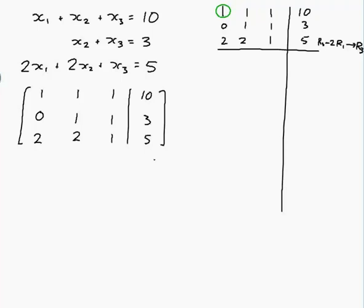We haven't changed row 1 or row 2. In fact, elementary row operations only change one row at a time. So 2 minus 2 lots of 1 is 0, 2 minus 2 lots of 1 is 0, 1 minus 2 lots of 1 is minus 1, and 5 minus 2 lots of 10, so 5 minus 20 would be minus 15.